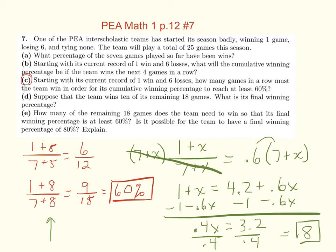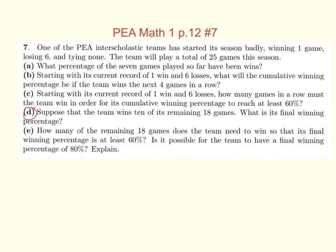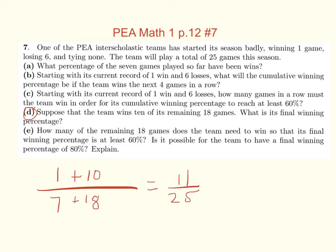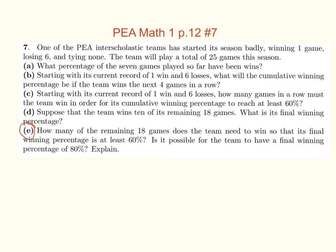So 8 games will work there. D: suppose that the team wins 10 of its remaining 18 games. So it was 1 win in 7 games, and it won 10 of its remaining 18, for a total of 11 over 25. So its final winning percentage was — it's under 500 — 44 percent. Exactly 44 percent. Now part E: how many of the remaining 18 games does the team need to win so its final winning percentage is at least 60 percent?